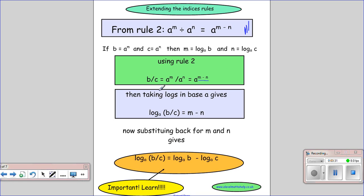Again, rewriting this in log form, this is our number. Here's our base and this is the power. So log in base a of b over c will equal the power that generates that answer, which is m minus n. Once again, we're going to substitute back for m and n. And now this gives us, if we have log in the base of b over c, we can split it out into log in the base a of b, take away log in base a of c.